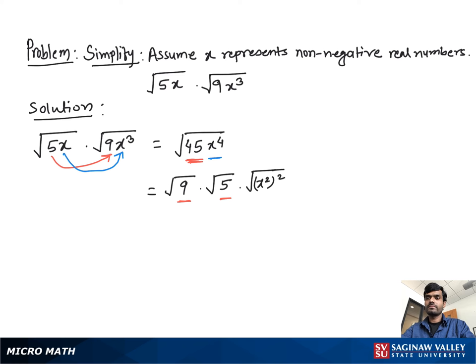Then we get square root 9 as 3 times square root 5 times x square. We can also write this as 3x square times square root 5, which is our final answer.